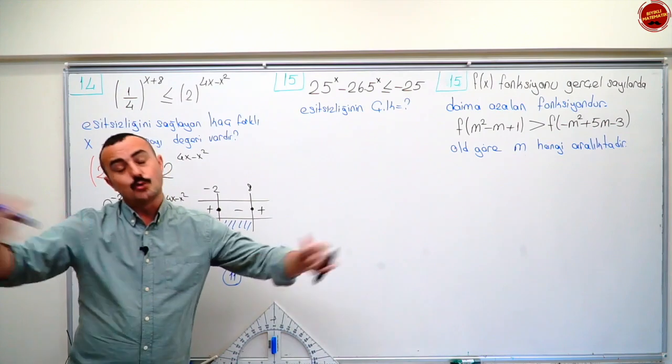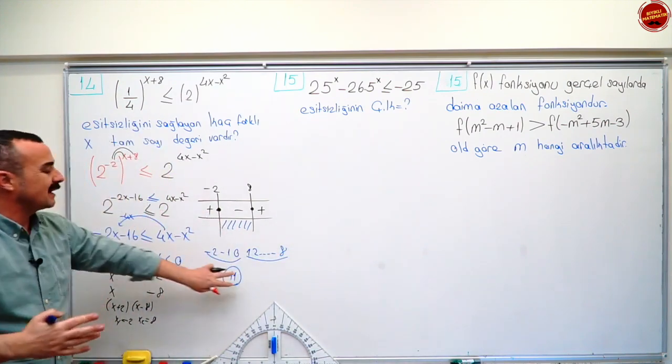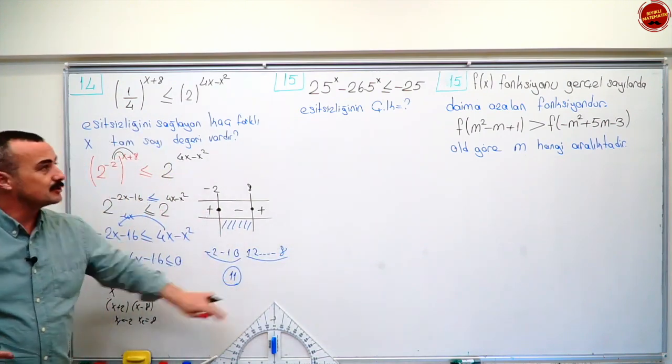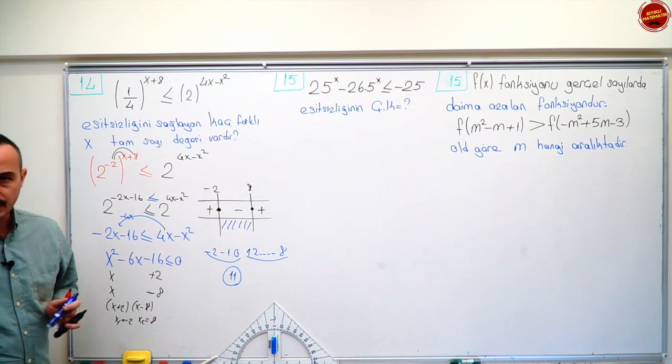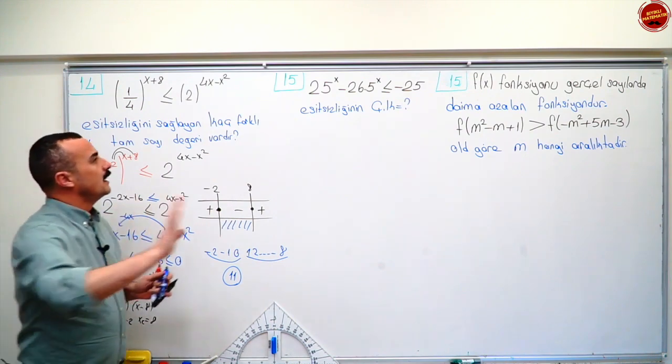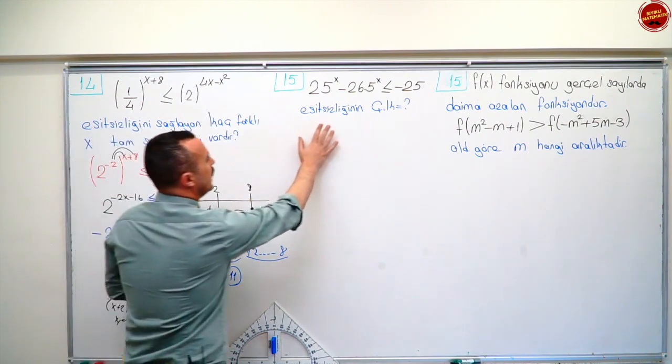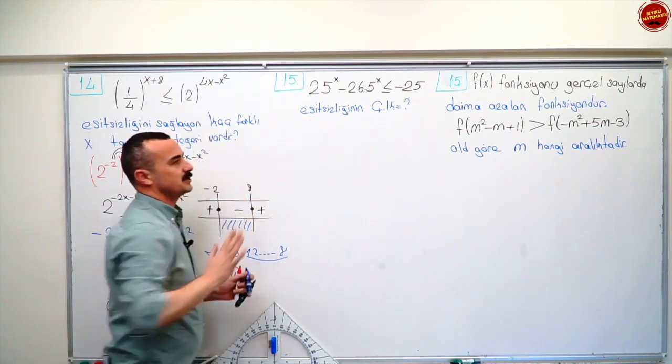O aralıkta sonsuz tane sayı var ama tam sayı sorduğu için sorumuzun cevabı on birdir. Tamam mı? Evet. Geldik şimdi on beşe.